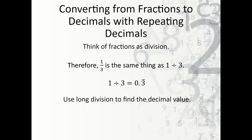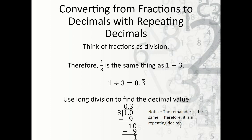We could also use long division: one divided by three. Three can't go into one, so I write 1.0 and add the decimal point. How many times does three go into ten? Three times — three times three is nine, which leaves one as my remainder. Three doesn't go into one, so I bring down another zero. Three goes into ten three times again, giving nine with one remainder again. I keep getting one as a remainder, so it just keeps repeating — 0.3 repeating.